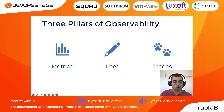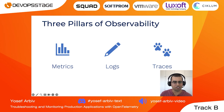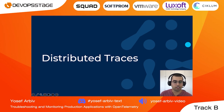Then we have logs. Logs are the most basic kind of telemetry data. Almost any system produces logs, and logs tell us why something happened in our system. And then we have traces. Traces tell us where something happened inside our system. When talking about distributed systems, we need to talk about distributed traces.